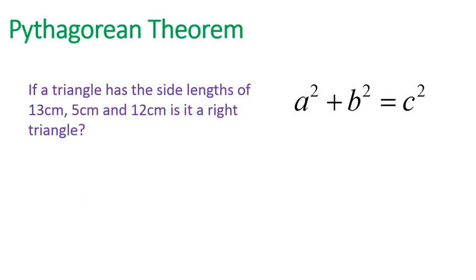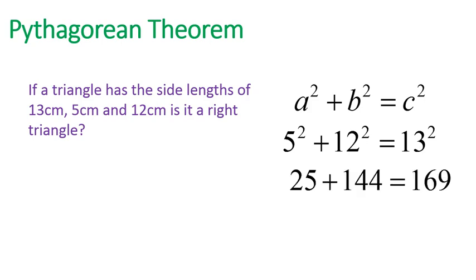Let's try another one. If a triangle has a side length of 13, 5, and 12 centimeters, is it a right-angle triangle? With this one, I change the order of the numbers. It doesn't matter which one is the 5 and the 12. What's really important is that our C value is the largest value. So 13 is our largest value. Let's go ahead and square those numbers. 5 squared is 25, 12 squared is 144, and 13 squared is 169. And they add up to be equal on both sides. Therefore, this is a right-angle triangle.